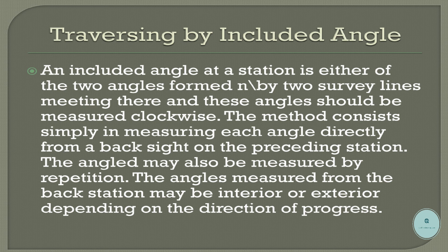Traversing by included angle: an included angle at a station is either of the two angles formed by two survey lines meeting there, and these angles should be measured clockwise. The method consists simply of measuring each angle directly from a back sight on the preceding station. The angles may also be measured by repetition. The angles measured from the back station may be interior or exterior, depending on the direction of progress of the traverse.